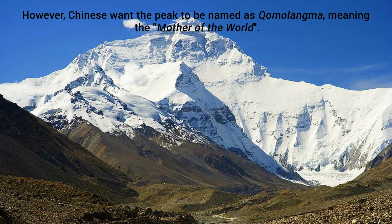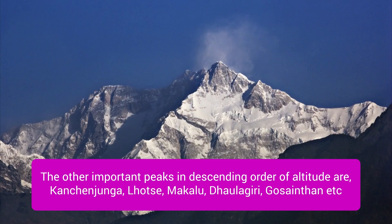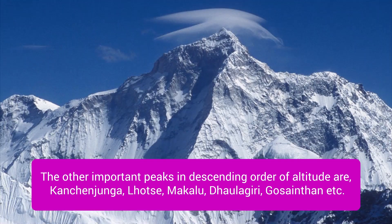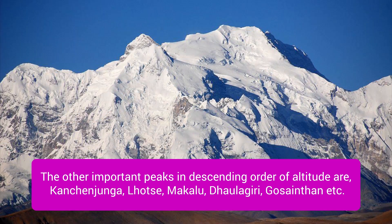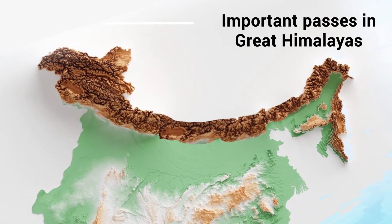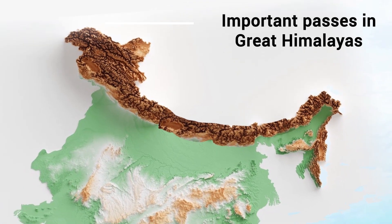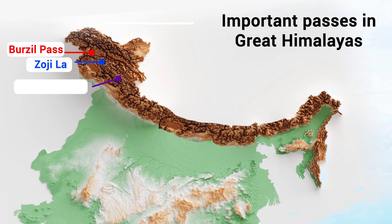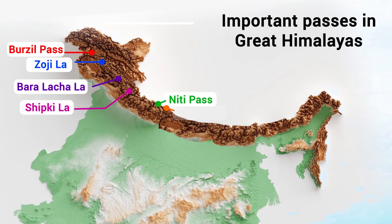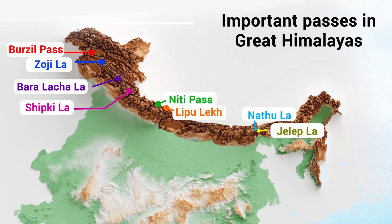Other important peaks in the Great Himalayas in descending order of altitude are Kanchenjunga, Lhotse, Makalu, Dhaulagiri, Manaslu, Gosainthan, etc. There are also important passes in the Great Himalayas from west to east: Burzil Pass and Zoji La in Jammu and Kashmir; Baralacha La and Shipki La in Himachal Pradesh; Thaga La, Niti Pass, and Lipulekh Pass in Uttarakhand; and Nathu La and Jelep La in Sikkim. Please keep these in mind for the UPSC examination.